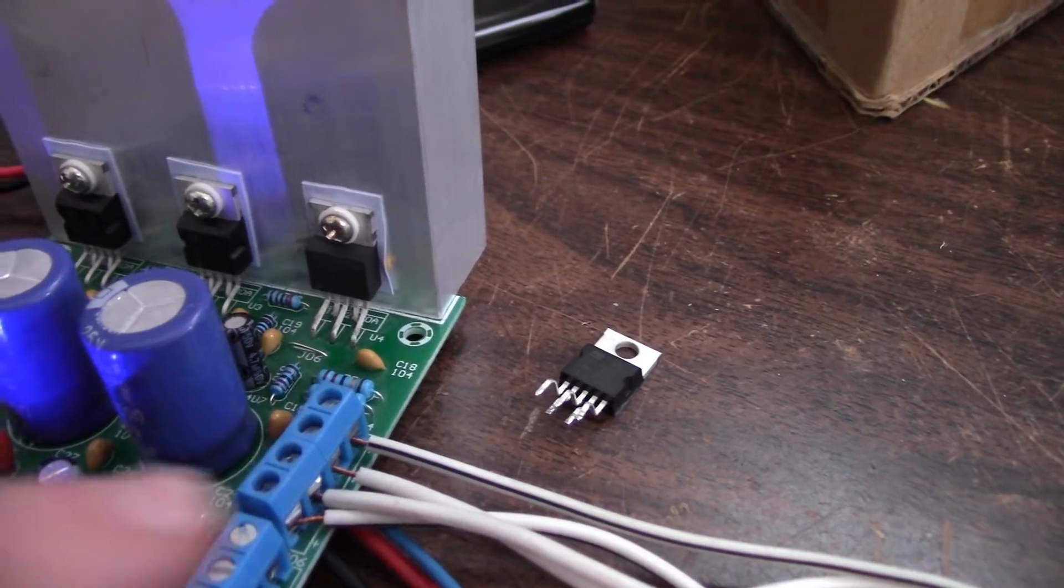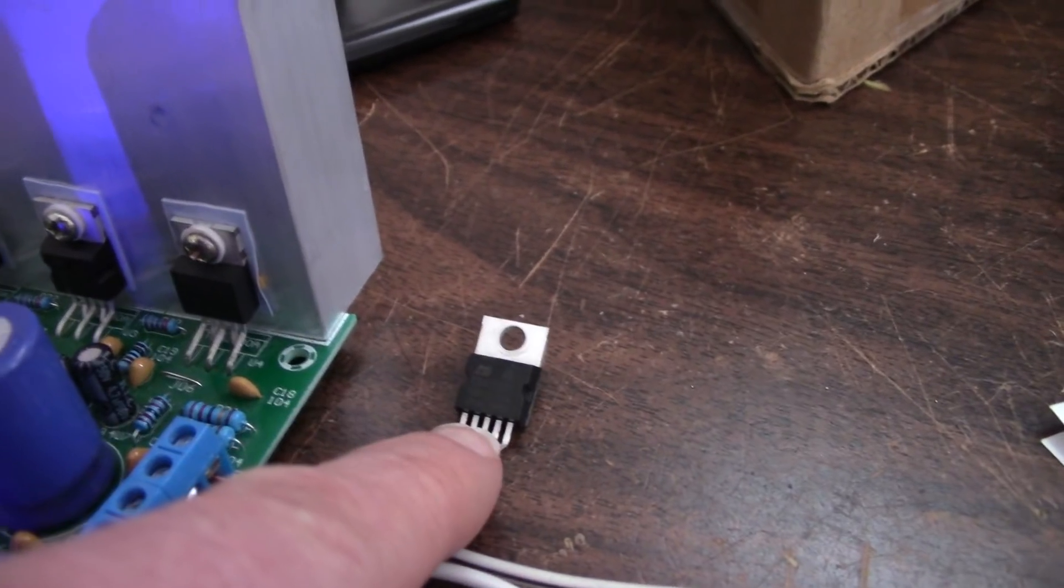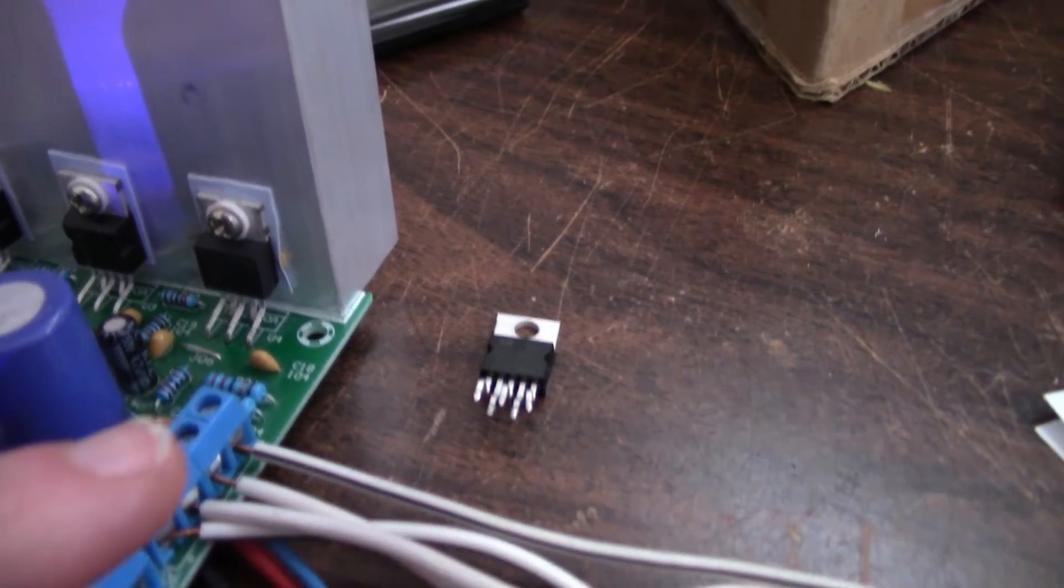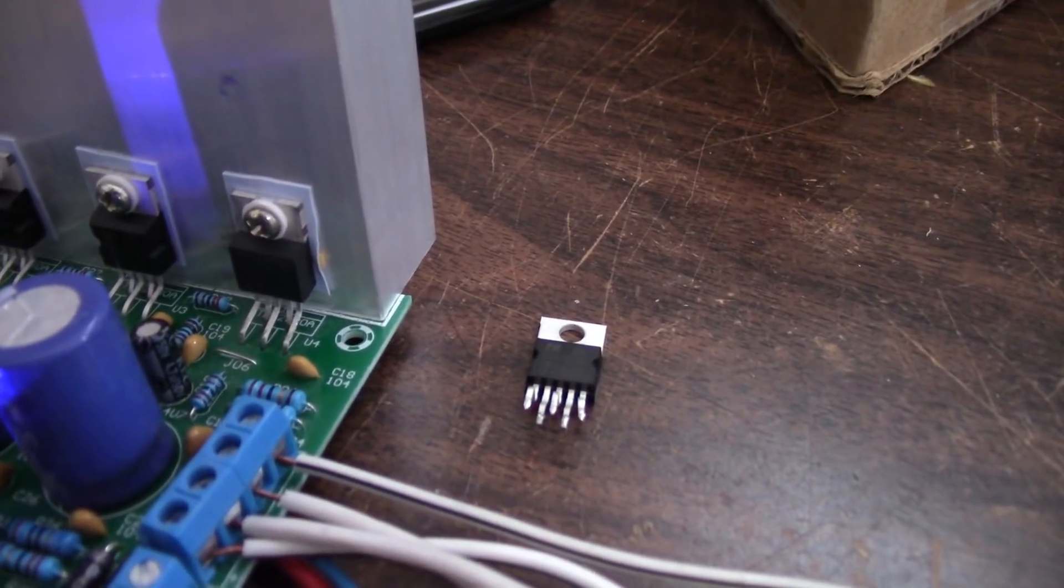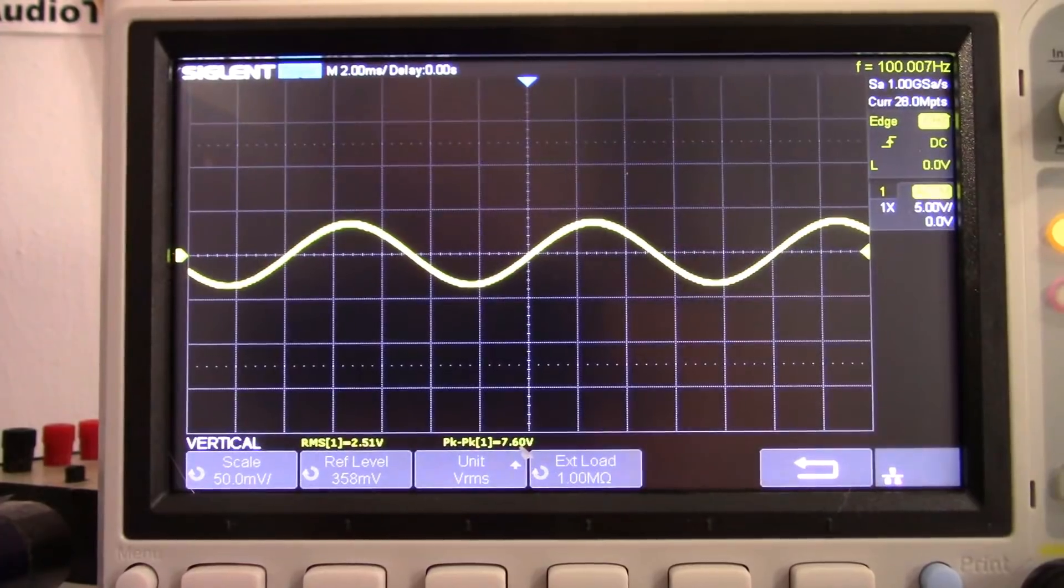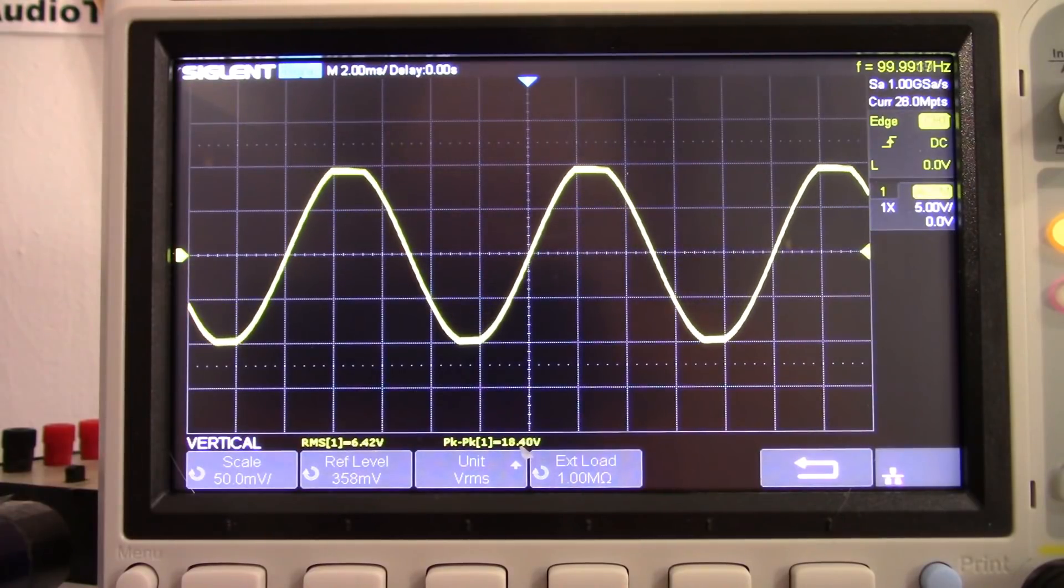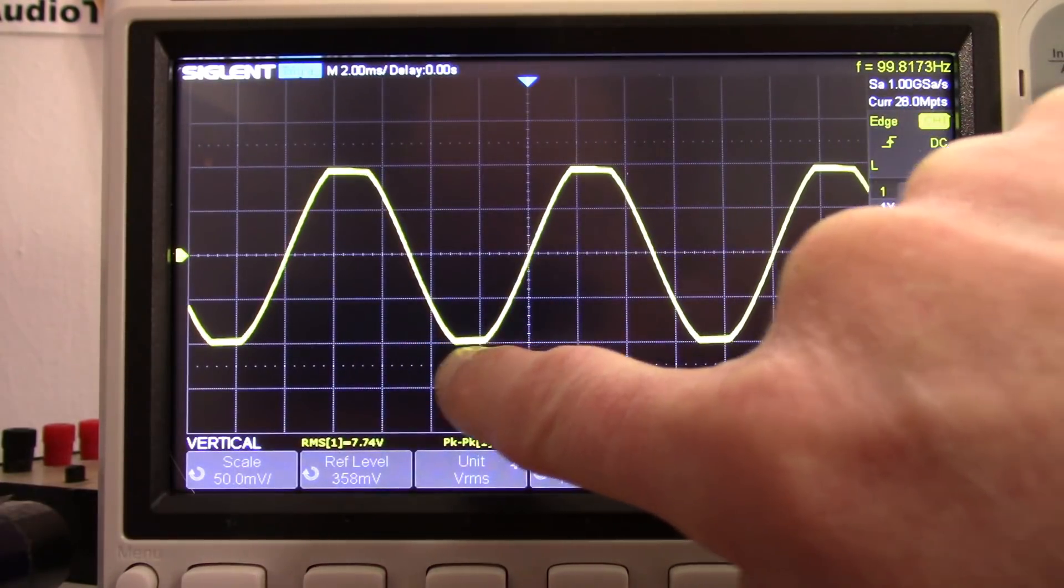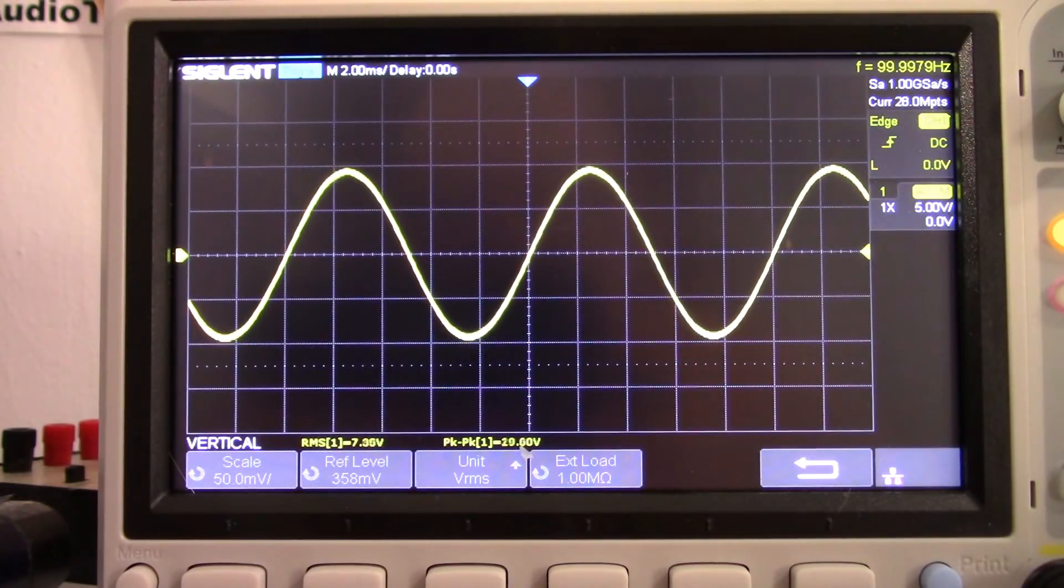Okay so I substituted an LM1875 for the counterfeit TDA2030A and take some measurements again here and see how it performs. Okay let's see what happens here, crank it up. There's clipping and what don't you see? It's not oscillating. Is it much better? Those chips are junk, they oscillate. Counterfeit junk.